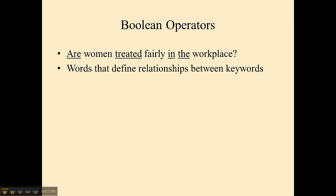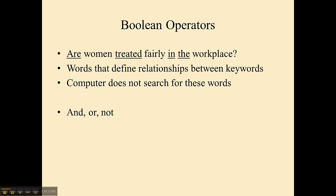Boolean operators are basically those words that define the relationships between the keywords — what are these words to each other? The computer does not search for these words. The Boolean operators — there are several of them, and these are the three main ones — are AND, OR, and NOT. The computer doesn't search for these words; it just tells it what to do with the keywords that you've typed in.